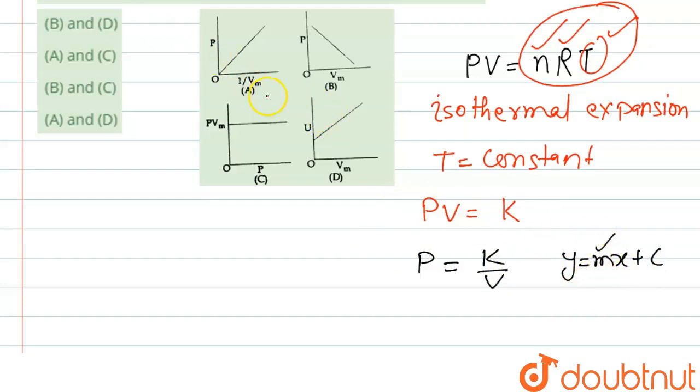Here, slope is M which in the equation is K. And 1 by V is X, that is in the graph it is given as 1/Vm. So Vm and P is Y. So from this equation we can say that this graph is correct.